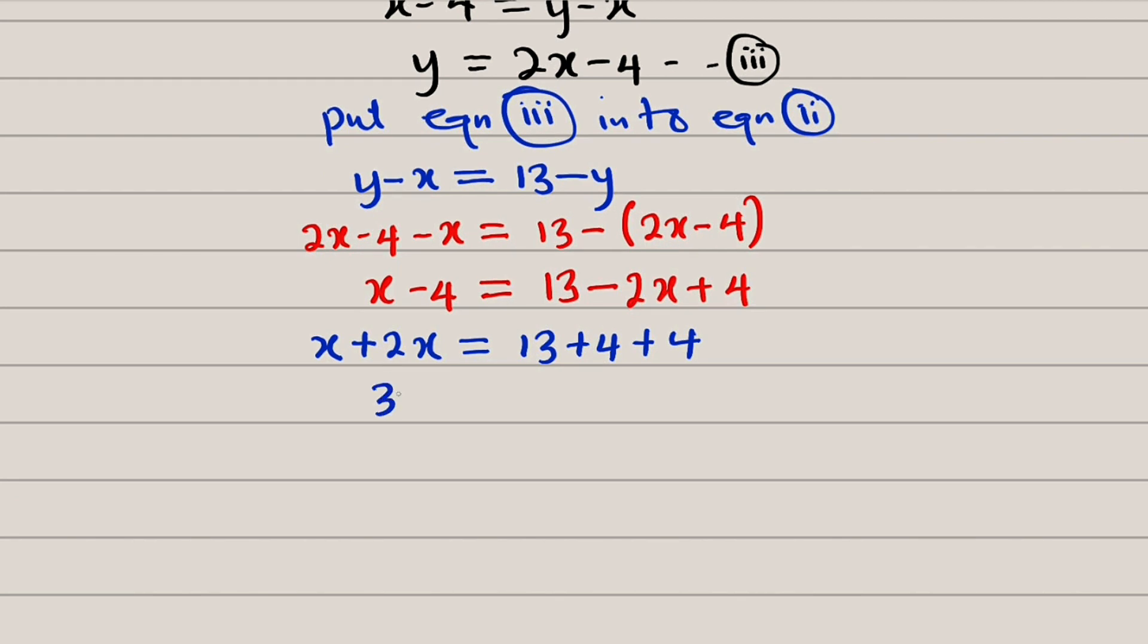To the left, we have 3x. To the right, we have 13 plus 4, which is 17. 17 plus 4 is 21. So this is 21. If you divide both sides by 3, you have x equal to 21 divided by 3. And x is equal to 7.